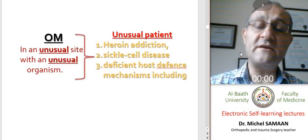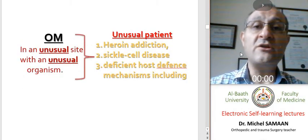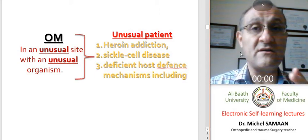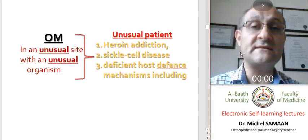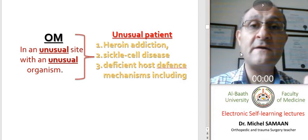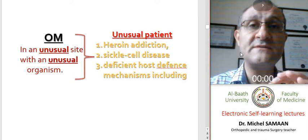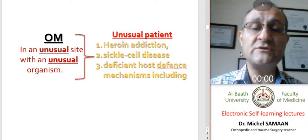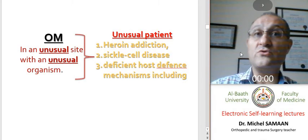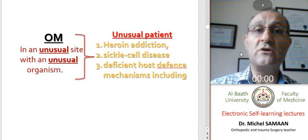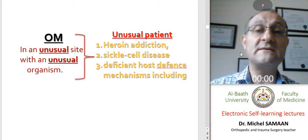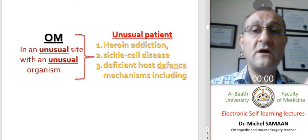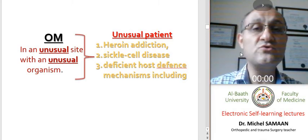We should know that if we discover infection in unusual sites and with unusual organisms such as Salmonella, Pseudomonas, or Fungi, we should suspect unusual patients — either a heroin-addicted patient, an immunosuppressed patient, or a patient who has sickle cell disease. So, unusual organism and unusual site should lead us to suspect unusual patients.